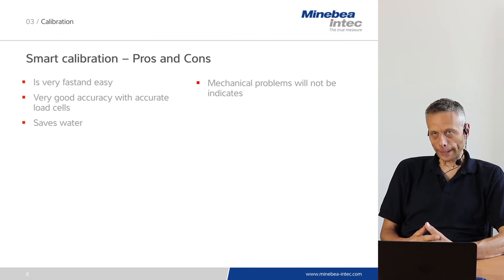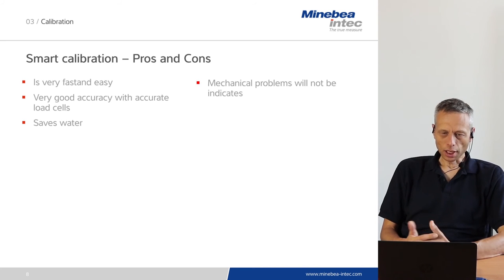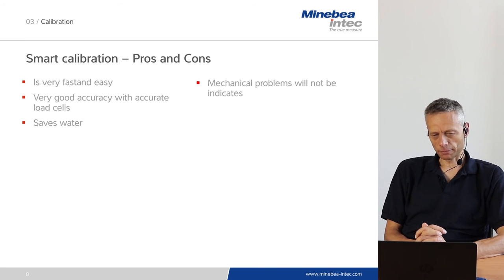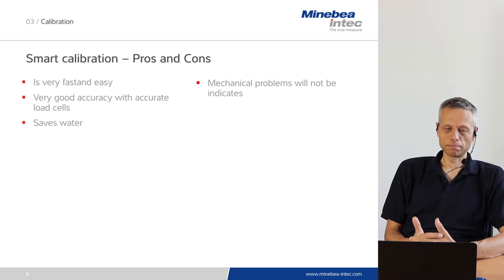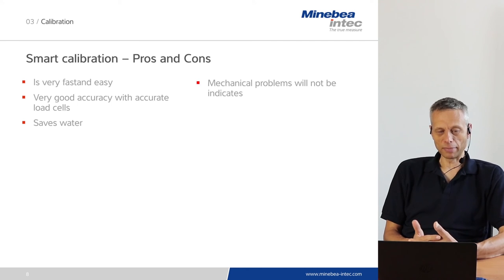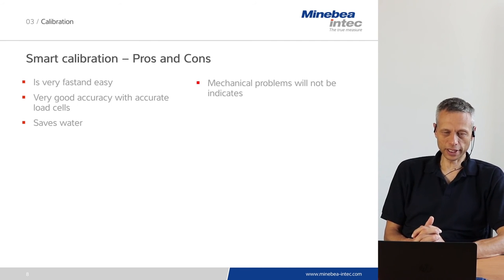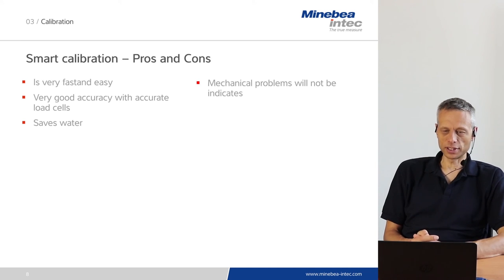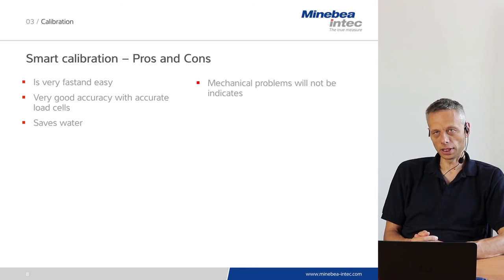We have seen the practical demonstration of smart calibration. As a summary, we can state that this method is very fast and easy. The accuracy will be very good with accurate load cells and a good mechanical setup. The method also saves a significant amount of water compared to calibration with water. The only con is that mechanical problems, if any exist, will not be indicated.